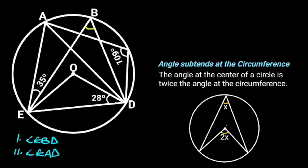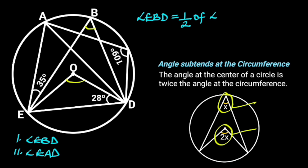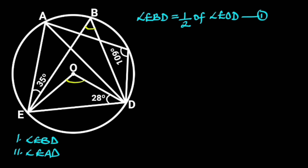From this theorem, 2x is the angle at the center and x is the angle at the circumference. The angle at the circumference must always be half of the angle at the center. From the question, angle EOD is the angle at the center, so angle EBD is half of angle EOD — let's call this equation 1. Since angle EOD is unknown, we need to calculate it first.